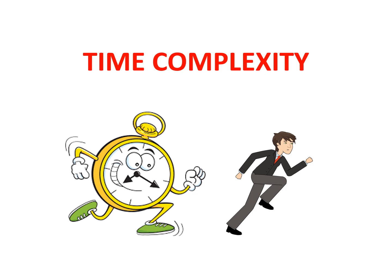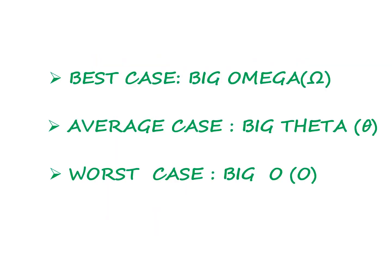An algorithm can be analyzed using three ways: first, the best case, which is denoted by big omega; next, the average case, denoted by big theta; and the worst case, denoted by big O.